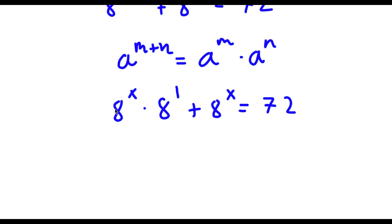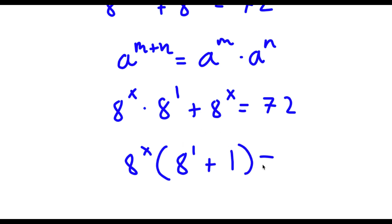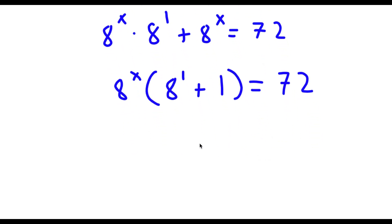Now from here, because both of these terms have 8 to the power of x, I'm going to factor out 8 to the power of x. So now I have 8 to the power of x times 8 to the power of 1 plus 1, which equals 8 to the power of x times 9, and this is equal to 72.